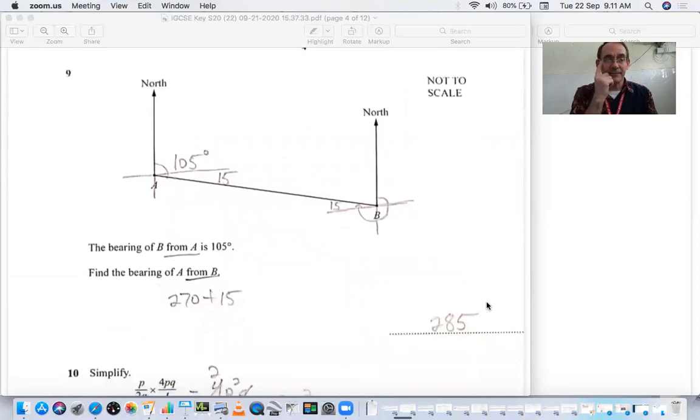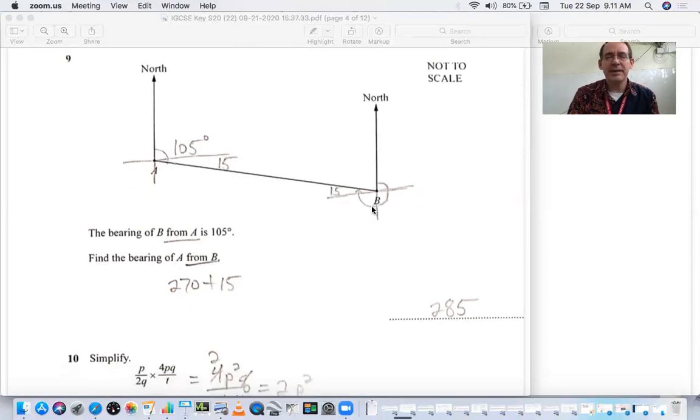Number 9, here we have a bearing. The bearing of B from A is 105. So here's our A. You start at north, you rotate clockwise 105 degrees and that is facing B. If we subtract our 90 from the north to east, that would leave 15 degrees left here. You draw in your north, south, east, west down here. These are parallel, meaning alternate interior angles are equal. So this is 15. Now find the bearing of A from B. Starting from north and going clockwise, we get to 90, 180, 270, plus 15 more. So 270 plus 15 is 285.